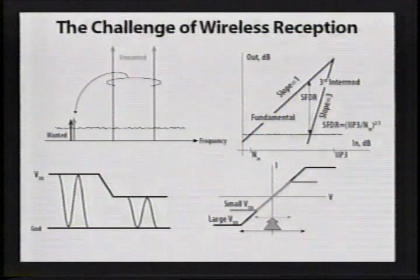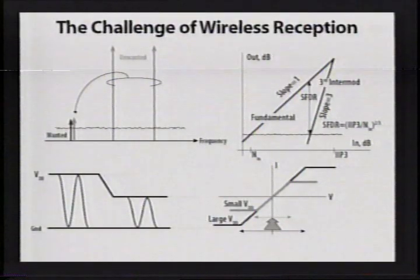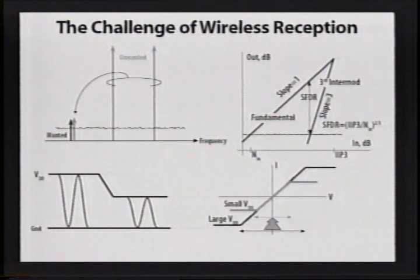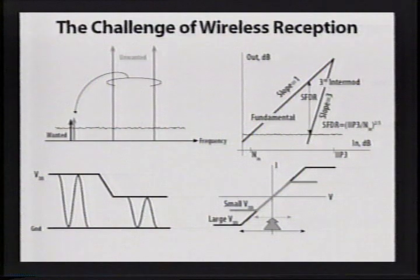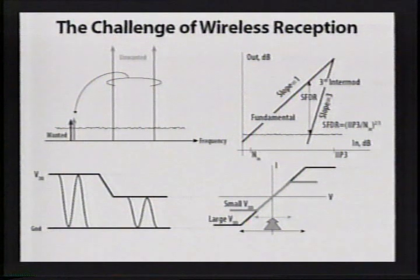The spurious-free dynamic range is the fundamental response relative to that point where the damaging effects of intermodulation and noise are comparable. As we lower the supply voltage in our integrated circuits dictated by technology, the spurious-free dynamic range will inevitably shrink. If the supply voltage goes down because transistors cannot stand high voltages, the maximum swing is diminished, distortion sets in earlier, and the differential amplifier characteristic shrinks—lowering the intercept point and spurious-free dynamic range. This is one of the biggest challenges in designing scaled technologies today.